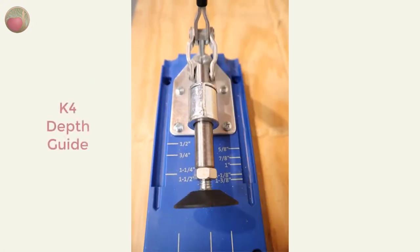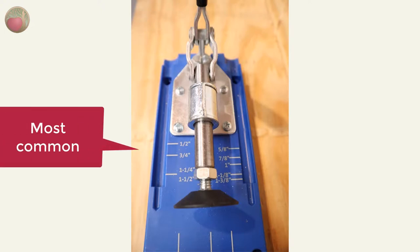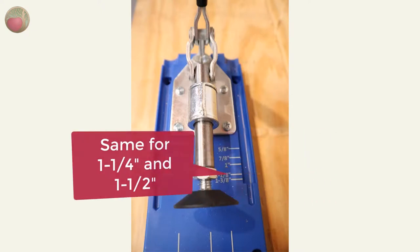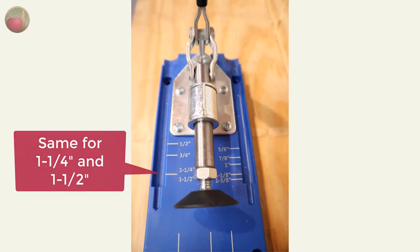Let's see the drill bit guide on the K4. It's on both sides of the assembly. The most common settings are on the left and as with the K3 the line between the one and one quarter inch and the one and one half is for both. The reason why again is because you jump to a longer screw for the one and one half inch depth.